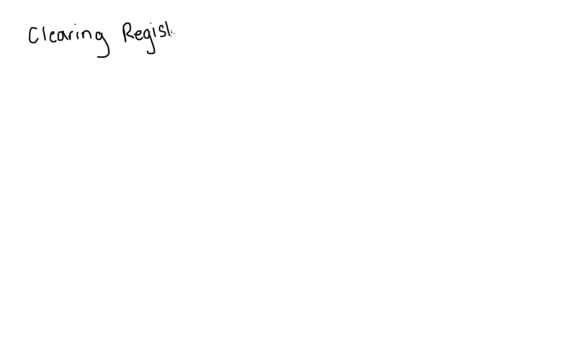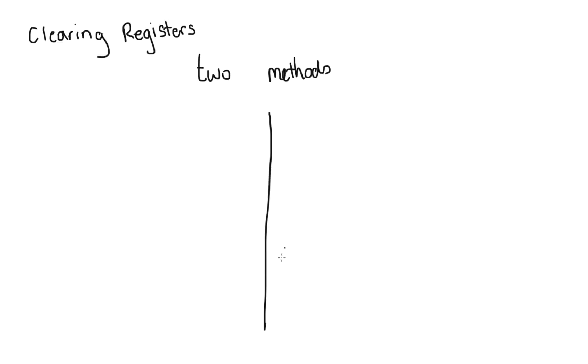Now we move on to clearing registers. All we need to do here is clear the register and set everything to zero, and there are two methods of doing this. We can use the AND logical operation or we can use the exclusive OR — XOR — logical operator.